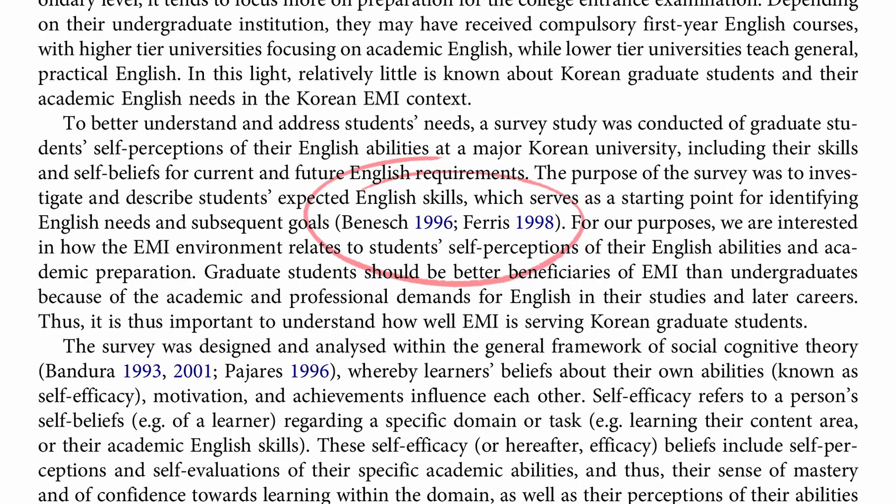Here we have Benish 1996 semicolon — I can cite two sources in the same parentheses. The Chicago author-date style is also called the Chicago parenthetical style because the information is in parentheses, not a footnote. I can cite two sources because I'm talking about information that comes from two different sources — the Benish 1996 and the Ferris 1998 — separated with a semicolon.